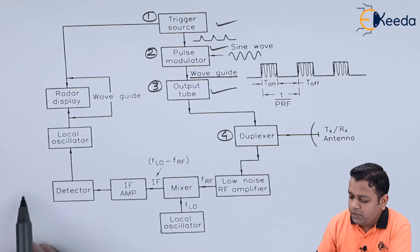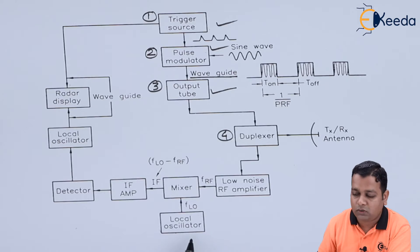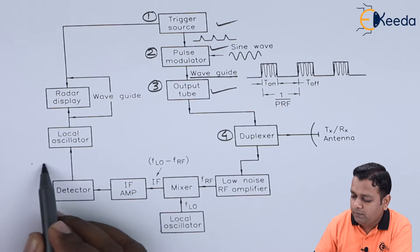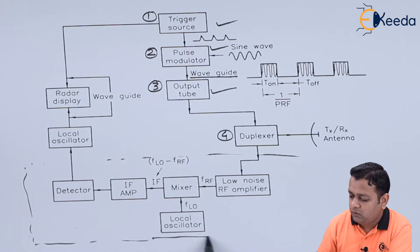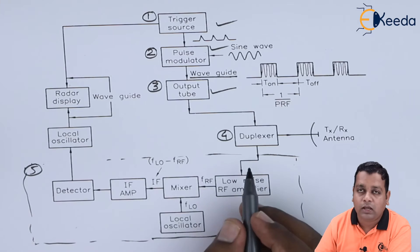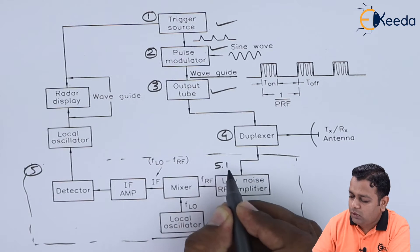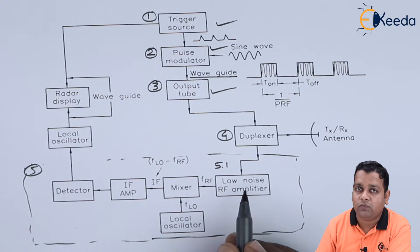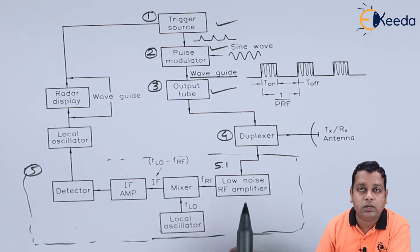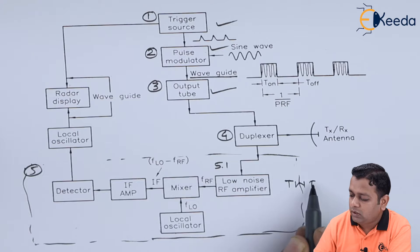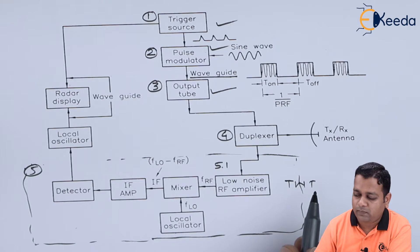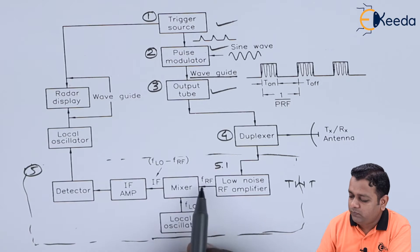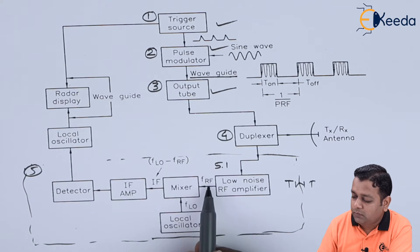Next to the duplexer we require the receiver for the pulse radar system. The complete receiver includes the low noise RF amplifier, mixer along with the local oscillator, IF amplifier, and detector — this forms block number 5. The first block in the receiver section, 5.1, is the low noise RF amplifier. It can be implemented with the help of a parametric amplifier or a TWT amplifier — TWT standing for traveling wave tube, which we covered in the second chapter. The low noise amplifier provides the amplified signal at the RF frequency F_RF.